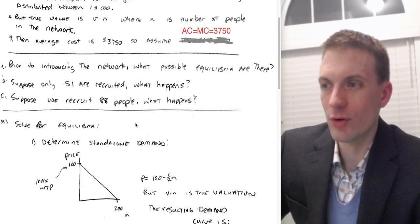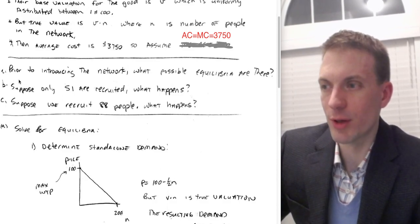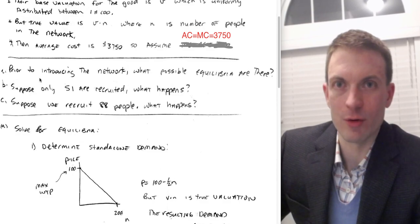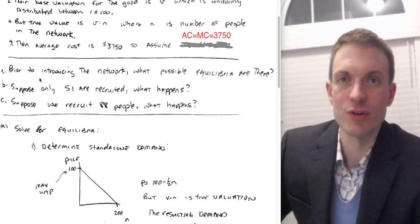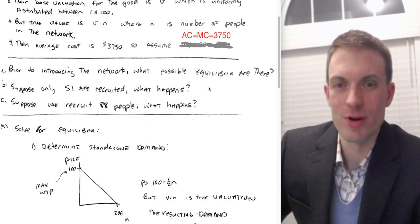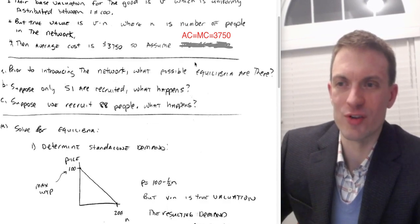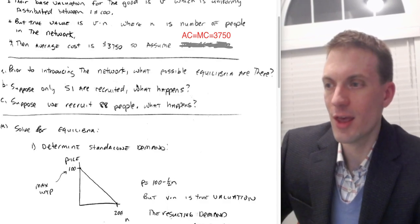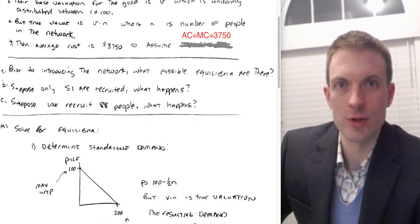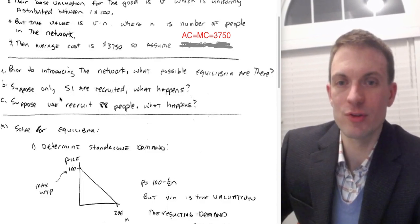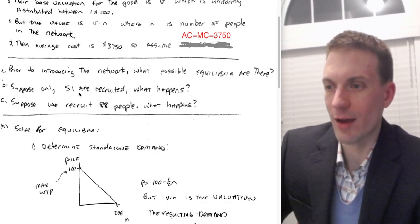Here is the structure of how this question plays out. We're interested in finding the plausible equilibria — essentially finding the zeros of the quadratic to identify possible network sizes. Then in the second and third parts we apply economic analysis: suppose we have 51 people recruited — what happens? Suppose we have 88 people recruited — what happens? And I'll do a couple more after that.